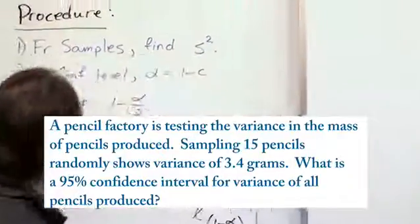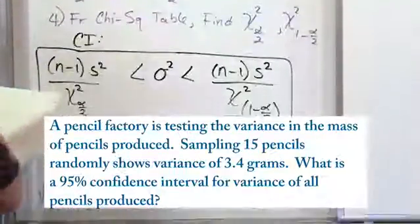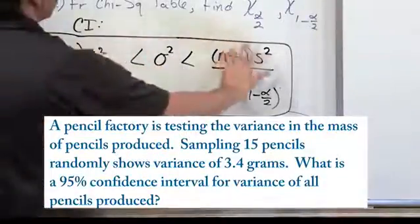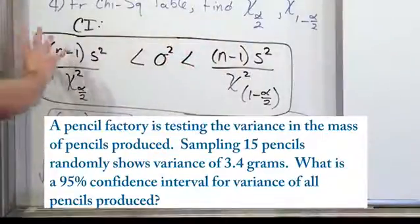So we go to our procedure. First of all, we're doing a confidence interval for variance. This is variance, sigma squared. So we're going to be using this equation right here, this confidence interval guy here. There's only four steps.